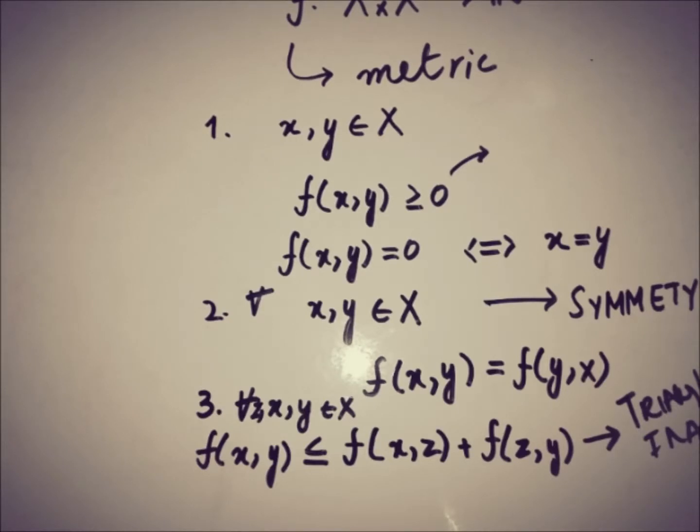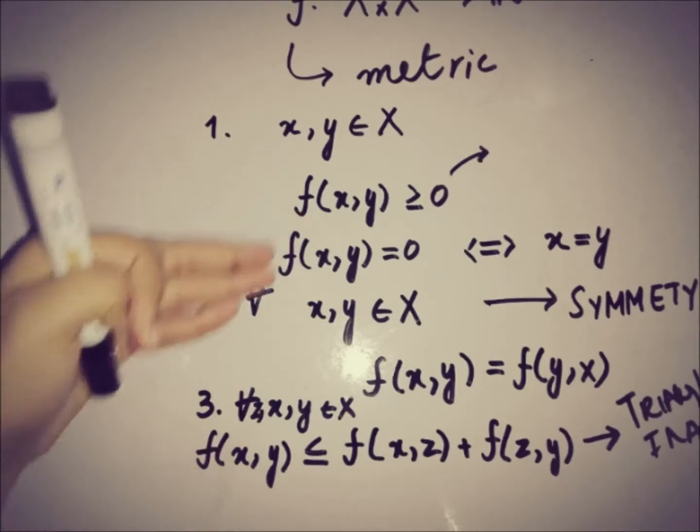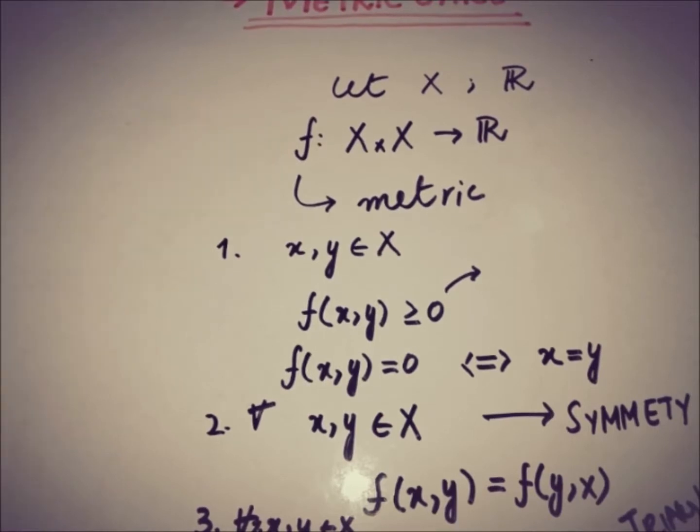So in metric we not only define function or represent it with f, but with a special representation. We can represent the metric function with a special letter D just because it has similarity with the distance function. So we can replace all of the f here with the letter D, just to represent that it is a metric function or it is a metric on a set X to R.